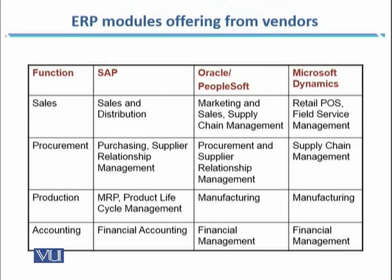For example, if you are talking about the sales function, SAP provides the Sales and Distribution ERP module, which you can buy and use for all sales and distribution related activities and business processes. If you decide to use Oracle, the modules focused on the sales function are Marketing and Sales and Supply Chain Management. For Microsoft Dynamics, the ERP module related to sales is Retail POS (Point of Sale) and Field Service Management.